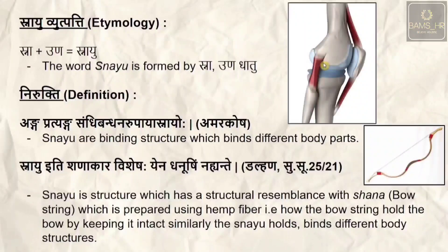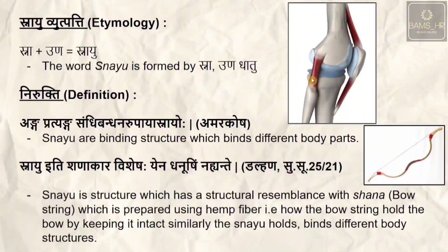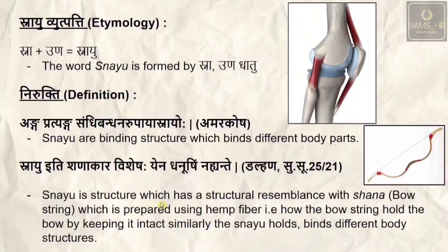It is important to clarify that snayu is not specifically a tendon, not a ligament, and not a muscle. We cannot correlate snayu with any single particular structure of the body — it may be a tendon, it may be a ligament, or it may be a muscle.